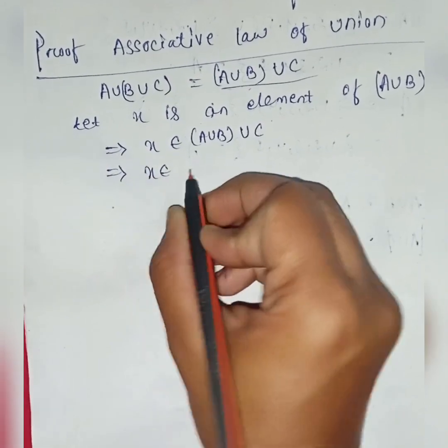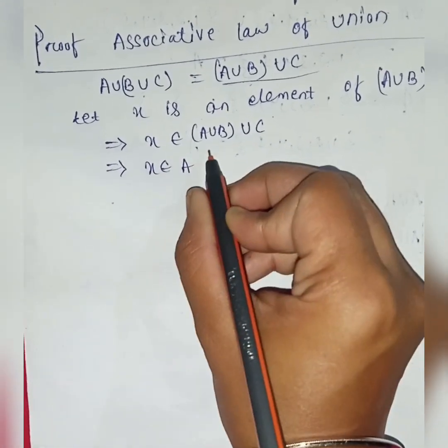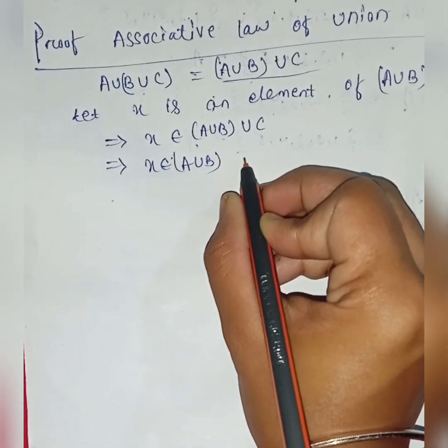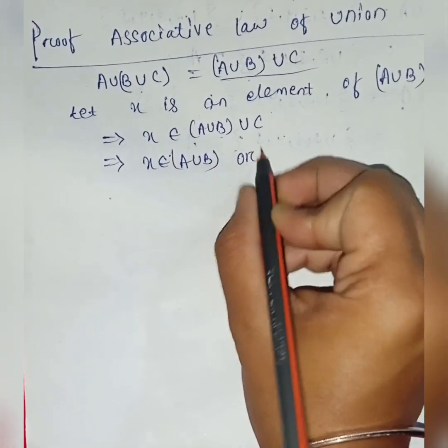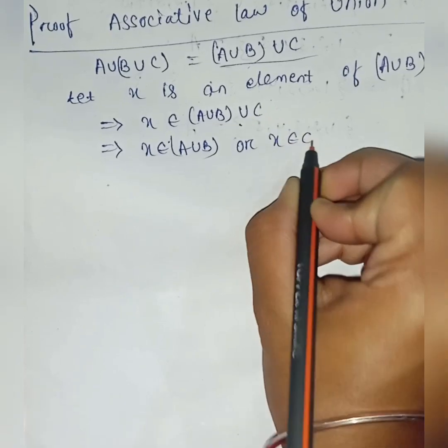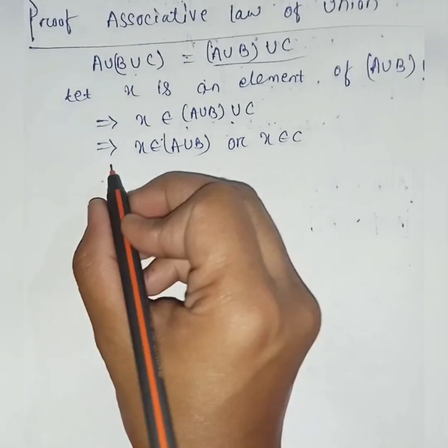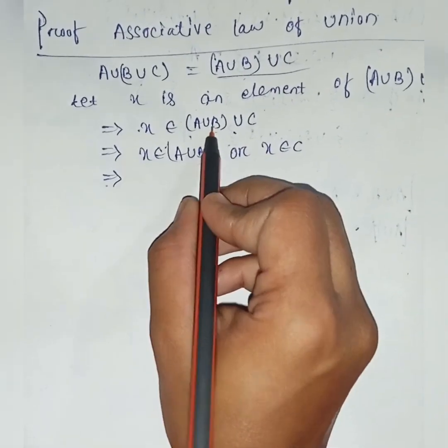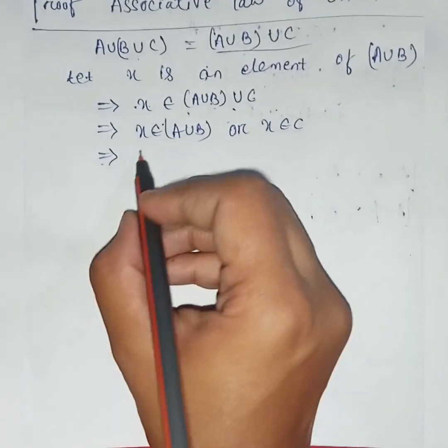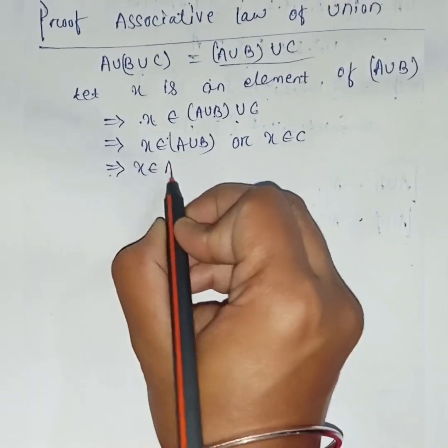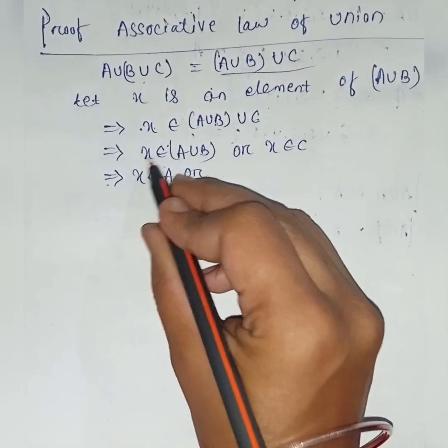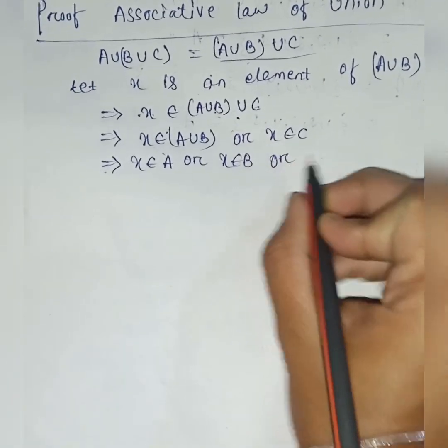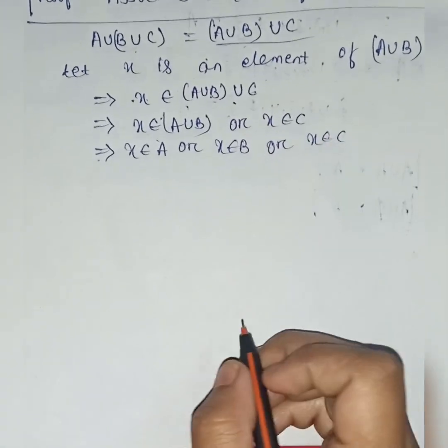I write it here as x belongs to A union B, or x belongs to C. We can distribute this: x belongs to A union B means x belongs to A or x belongs to B, or x belongs to C.